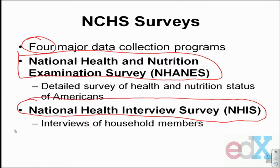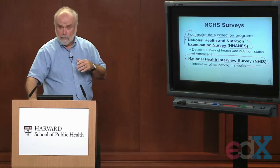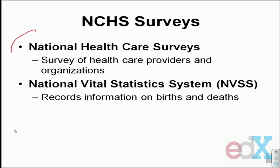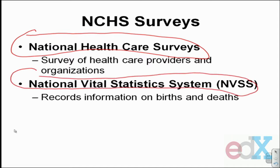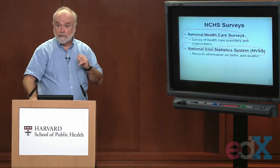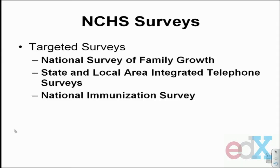The NHIS is an interview of people living in selected households around the country, where interviewers go to a household and interview members of families living there. Two other important surveys they do: one is called the National Health Care Survey, where they interview health care providers and organizations — going to doctors' offices and hospitals to review medical charts. And finally, there's the National Vital Statistical System, the NVSS, which uses information from birth and death certificates to measure health status. In addition to these major programs, they have three others targeted to specific health issues: the National Survey of Family Growth, the State and Local Area Integrated Telephone Surveys, and the National Immunization Survey.